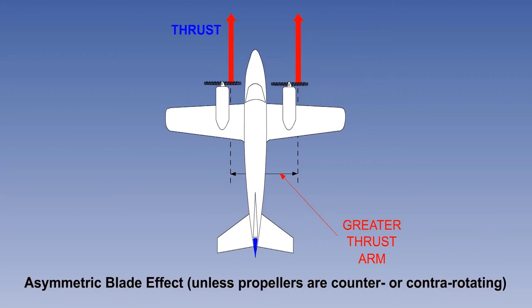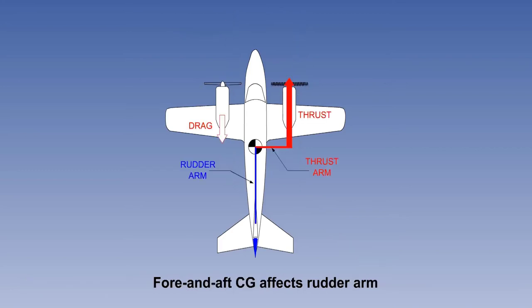If both engines rotate clockwise, the right engine has a longer thrust arm, and failure of the left engine gives a greater yaw moment. This asymmetric blade effect, or P-factor, is absent with counter-rotating and contra-rotating propellers, and of course on jets. The aircraft rotates around its CG, but its fore and aft position has no effect on the yawing moment from a failed engine. The rudder arm is affected, however, with an aft CG giving the worst case with the least rudder effectiveness.